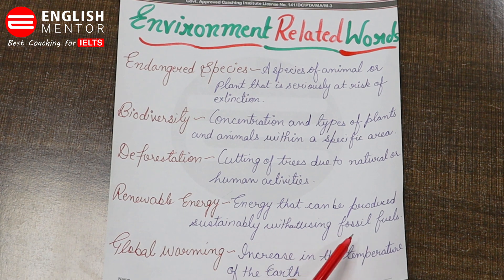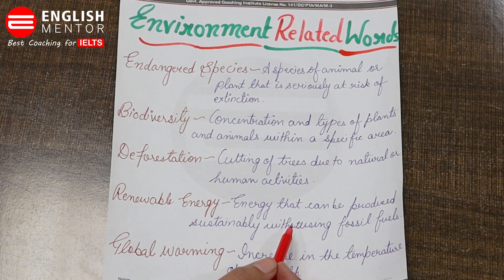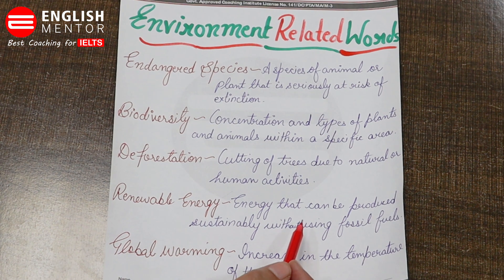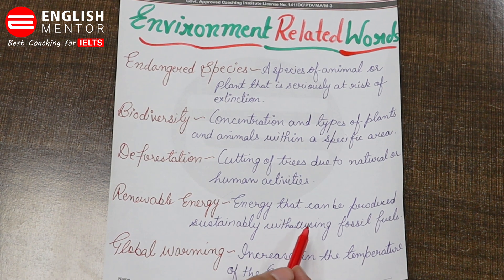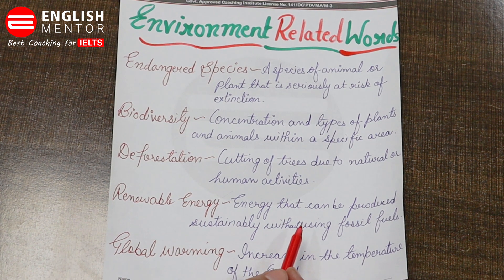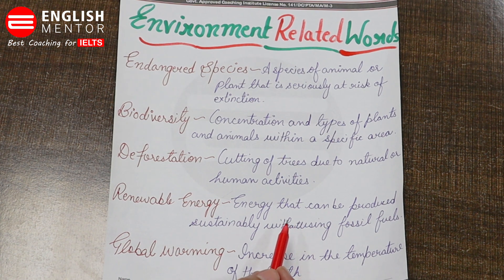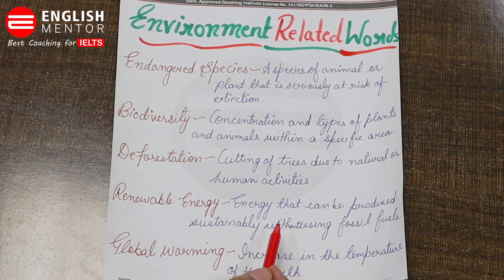The next one is 'renewable energy' — energy that can be produced sustainably without using fossil fuels. Energy that is produced without the consumption of fossil fuels like petrol and coal is called renewable energy. Renewable energy is eco-friendly; it is not harmful to the environment.